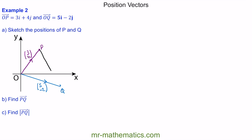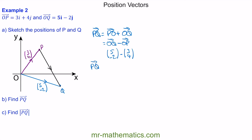The vector P to Q goes from P to Q. PQ equals P to O plus O to Q, which we can write as OQ minus OP. OQ is (5, -2) and OP is (3, 4). In the i direction: 5 minus 3 is 2. In the j direction: -2 minus 4 is -6. So the vector PQ is (2, -6), or 2i minus 6j.